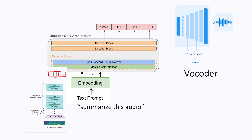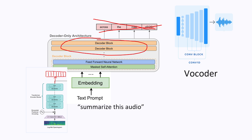The vocoder model is the last part of a speech LLM. When a language model is used with a vocoder, the text generation component is removed. Instead of generating text, the hidden layers of the last decoder blocks are passed into the vocoder to generate audio. The length and modality adapters may be used here but in reverse, to produce vectors of the appropriate length.